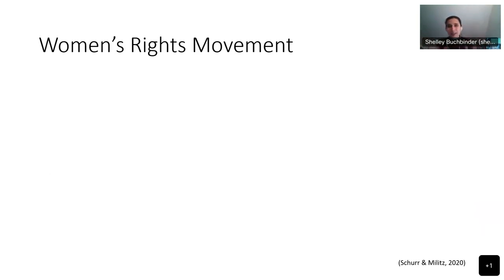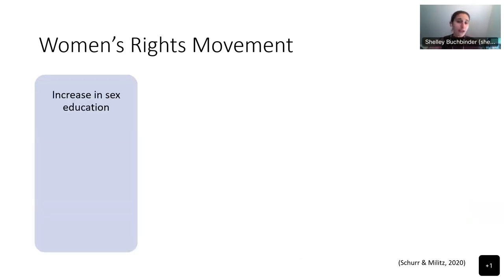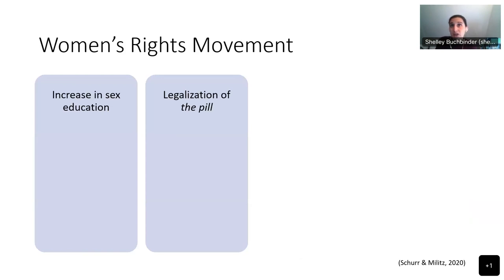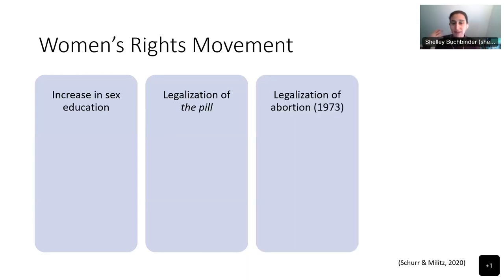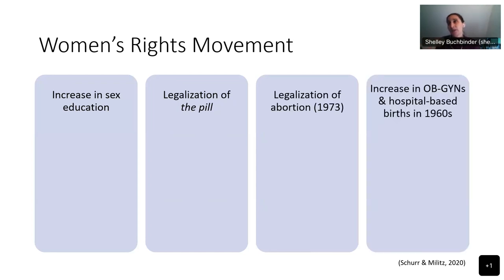Starting in the 1960s and accelerating into the 1970s, there was a break due to the civil rights movements of that era. The women's rights movement was very influential, leading to an increase in sex education, legalization of hormonal birth control, legalization of abortion, and an increase in obstetrics, gynecology, and hospital-based births in the 1960s, which made childbirth much safer for both pregnant women and fetuses and newborns.